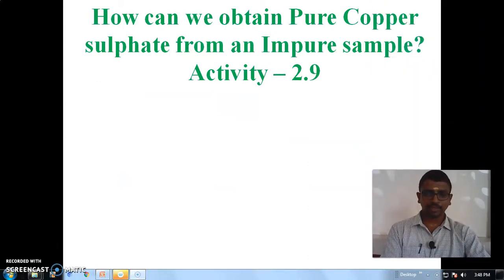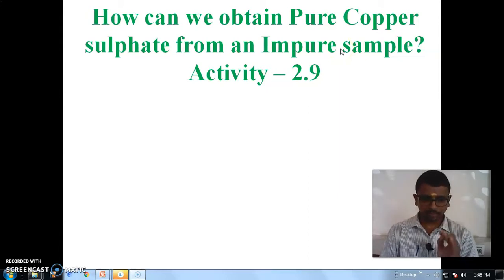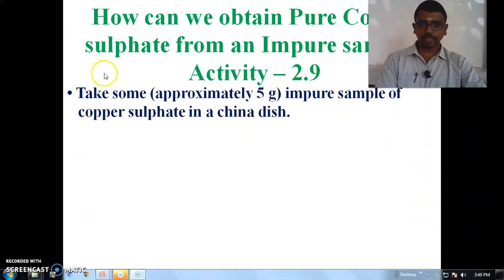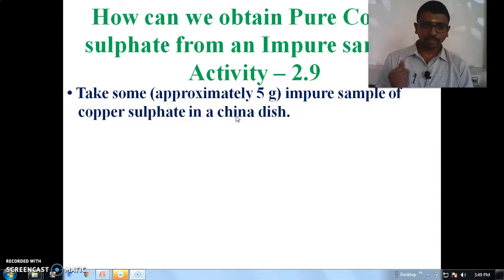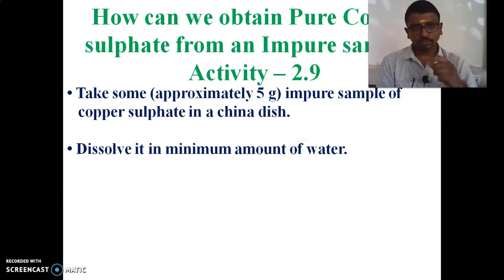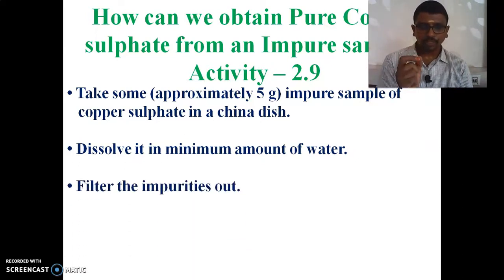Next, let us see how we can obtain pure copper sulphate from an impure sample — Activity 2.9. We have to take approximately 5 grams of impure copper sulphate in a china dish and dissolve it in a minimum amount of water. Then we have to filter out the impurities. If there are impurities, we can filter them first.